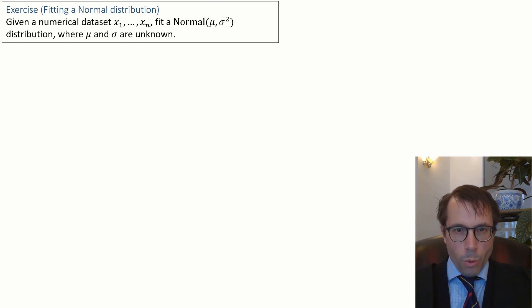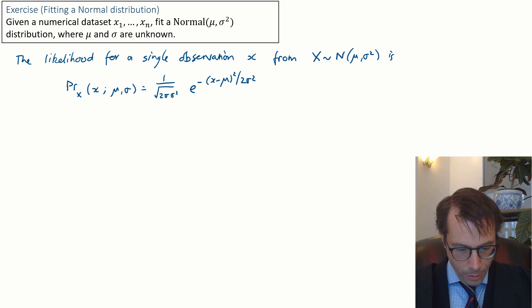First, we'll write out the likelihood for a single observation little x. If our random variable model is normal of mu sigma squared, then the likelihood function for little x is the standard formula from a normal density function, which you should remember and learn off by heart.